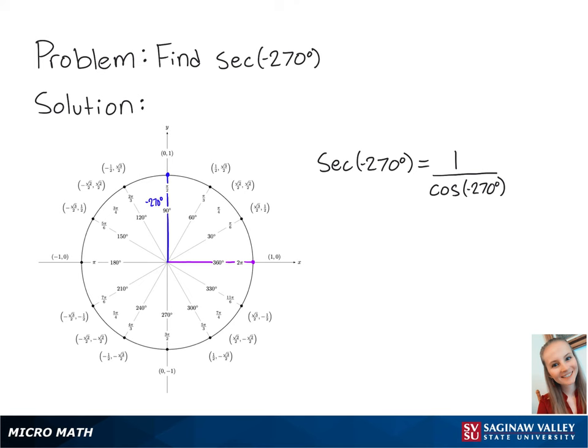Cosine correlates to the x-coordinate on the unit circle. So 1 over cosine of negative 270 degrees is equal to 1 over 0. Since we can't have 0 in the denominator, secant of negative 270 degrees is undefined. And this is the final answer.